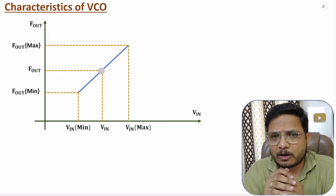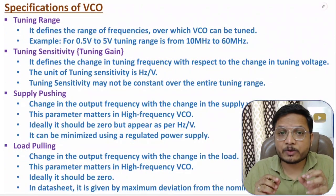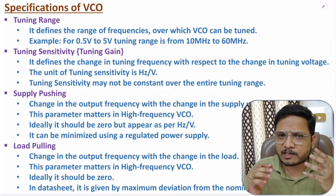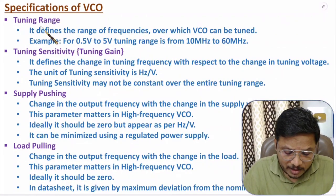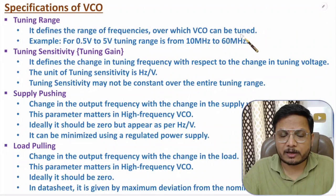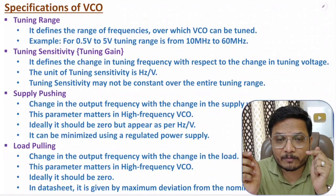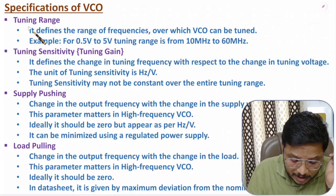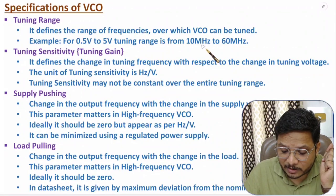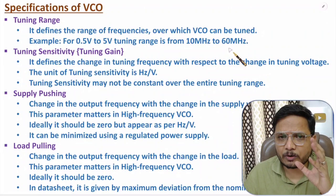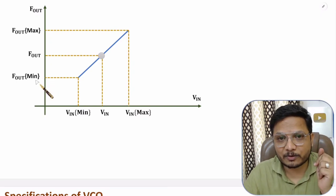Now let me discuss the essential parameters and specifications of VCO. The first specification is tuning range, which defines the range of frequencies over which the VCO can be tuned. For example, for 0.5V to 5V input, the tuning range might be 10 MHz to 60 MHz. As we change input voltage, output frequency changes — that range is the tuning range.